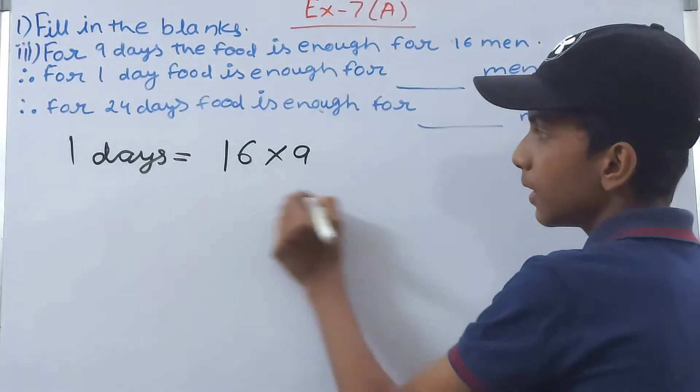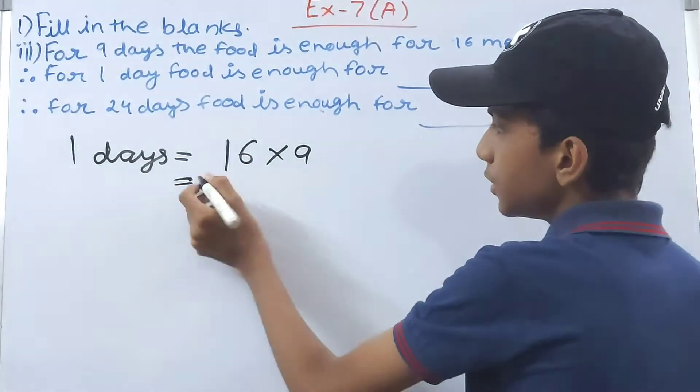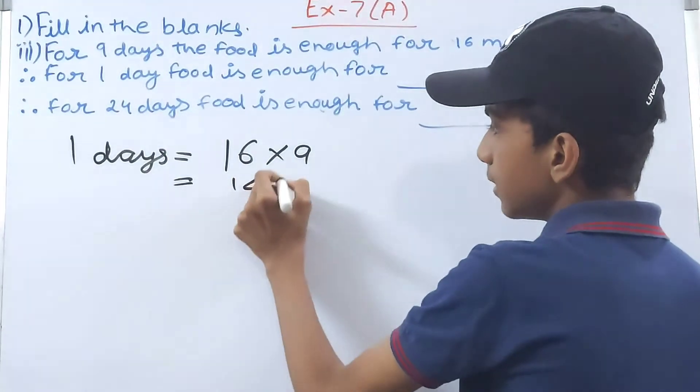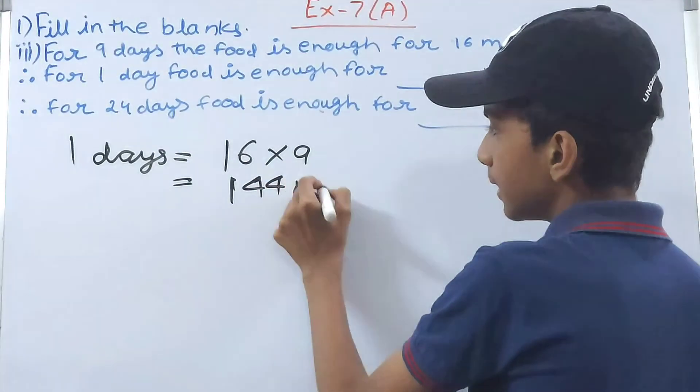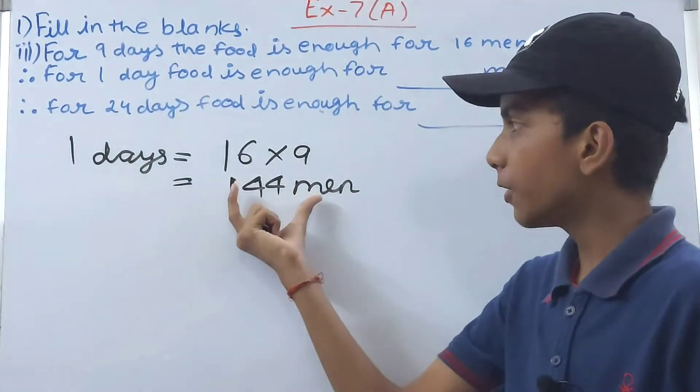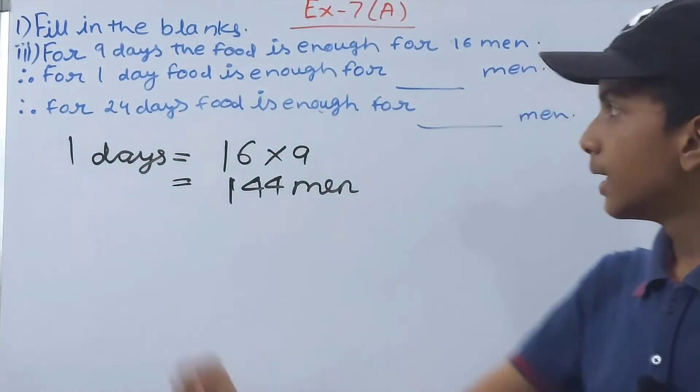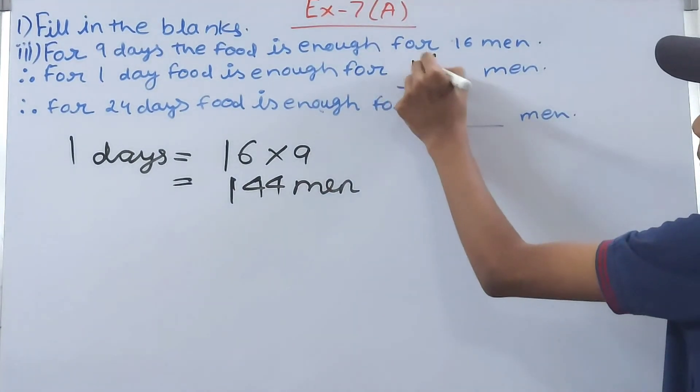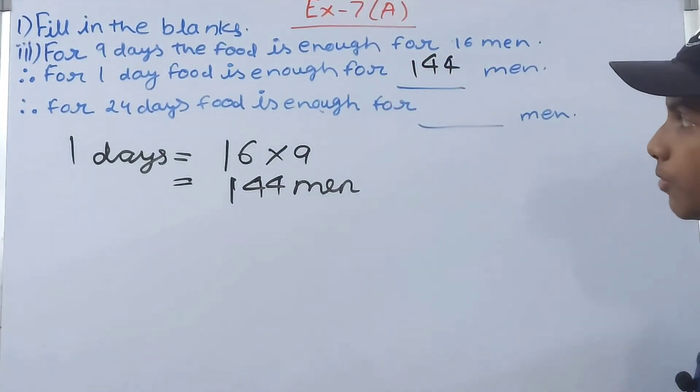So this much food is enough for 144 men in 1 day. Now we write it here, 144 as well. Now for 24 days what we will do? So this is 1 day.